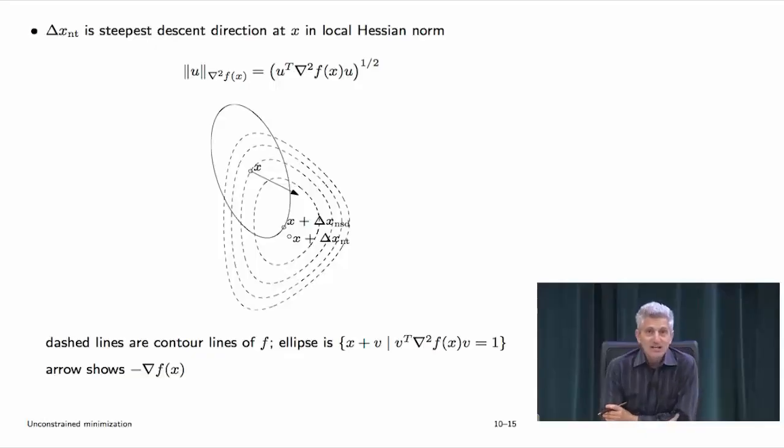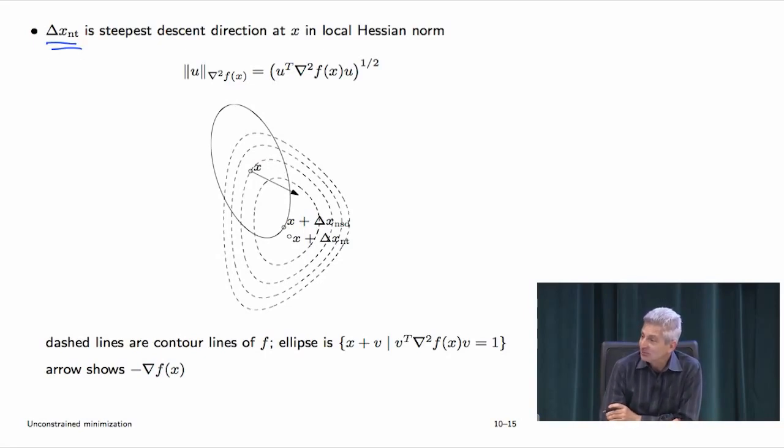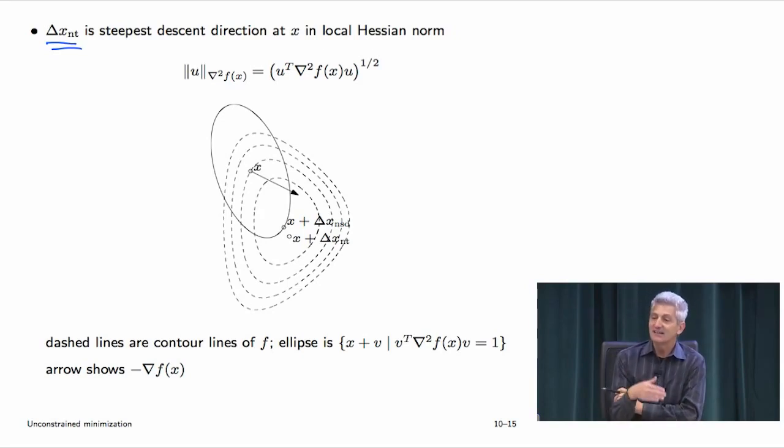One interesting method: evaluate the Hessian at the initial point x_0 just once, do a Cholesky factorization, change coordinates once, and do gradient descent in the new coordinates. If your initial point is reasonable, this works incredibly well. But Newton's method adapts the metric at every step. You could also update it every 10 or 30 steps — there are all sorts of variations. The Newton step is simply steepest descent in the local Hessian norm.